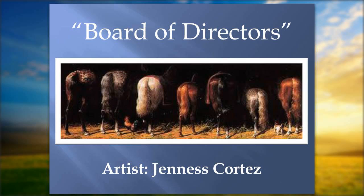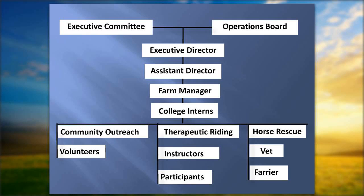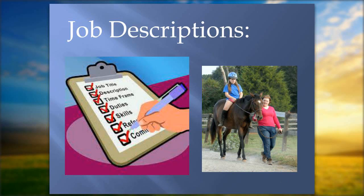We all need a board of directors — who is overseeing what we're doing and raising funds. You need a flow chart of how your organization works. Brook Hill Farm's board is divided into an executive committee and an operations board. Underneath that is the executive director, assistant director, farm manager, college interns, and then all our programs. A flow chart makes it clear who reports to whom. You also want job descriptions for everybody, including your volunteers — a written policy for what each person is expected to do.